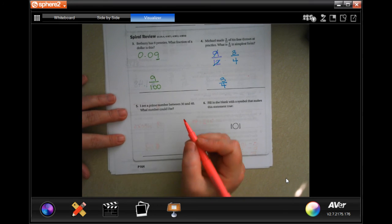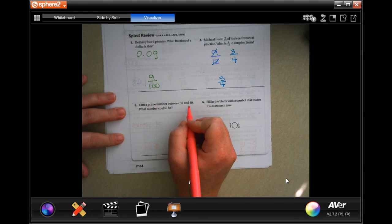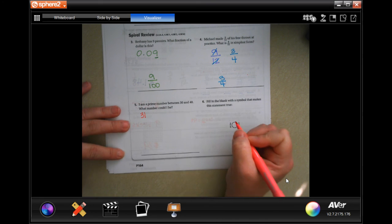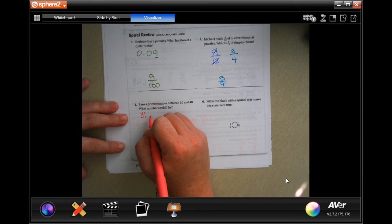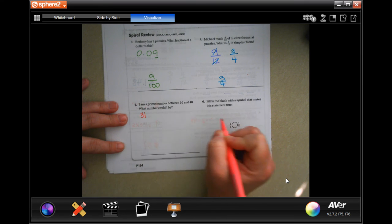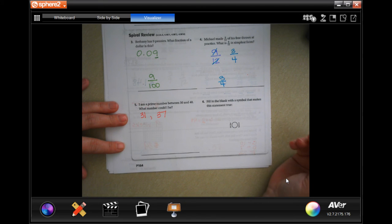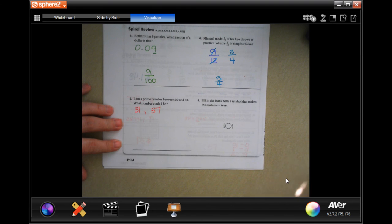A prime number between 30 and 40, what number could it be? Well we have 31 as a prime number, not 32, not 33, not 34, not 35, not 36, could be 37, not 38 and not 39. So you can either put 31 or 37, your choice.